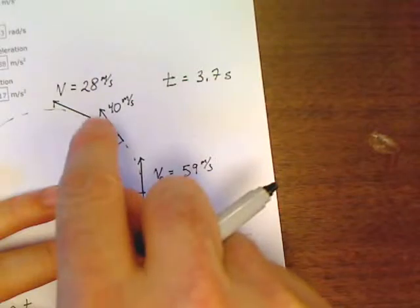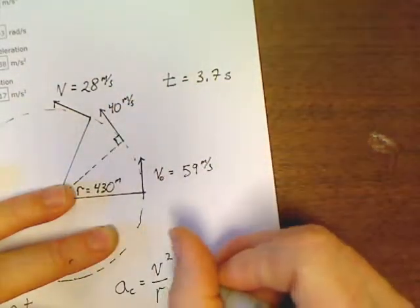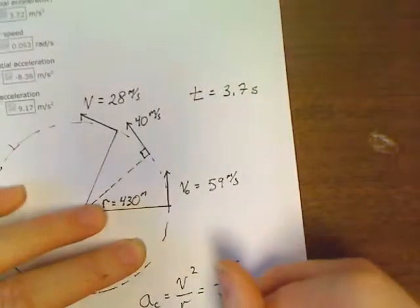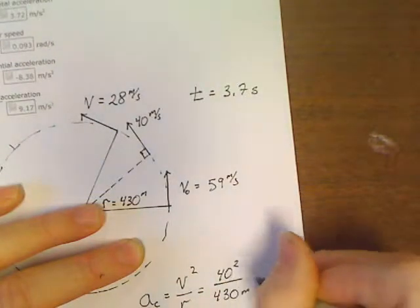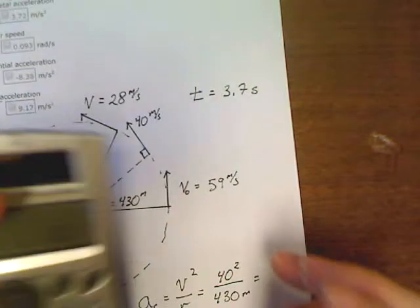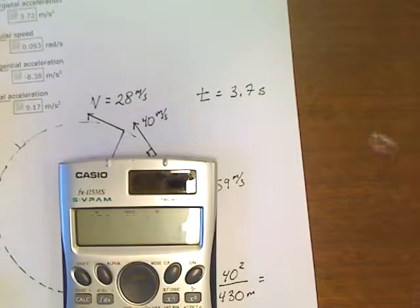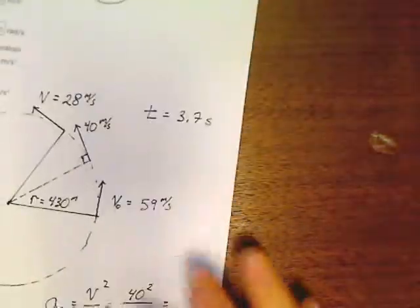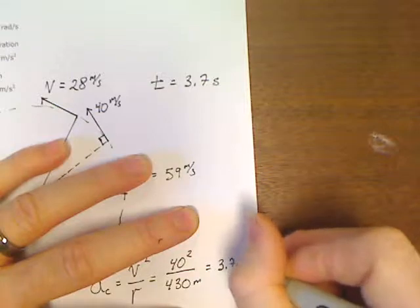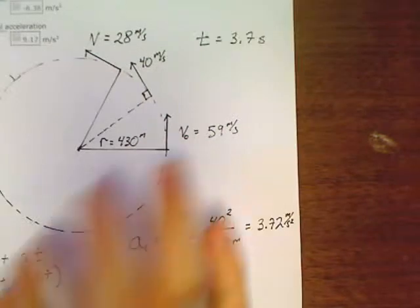Centripetal acceleration is just v squared over r. Well, look at what it's done. It said, find the acceleration at 40. Well, all we've got to do is plug numbers in. This would be 40 squared over, the radius is 430, and now we can come back in here. We've got this number, 40 squared divided by 430, 3.72. So, we've got an acceleration here of 3.72 meters per second squared. So, we found our centripetal acceleration. Well, that was easy enough.